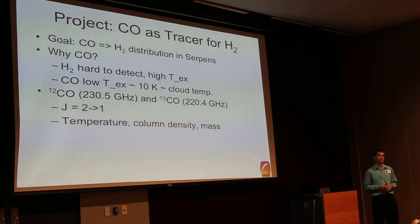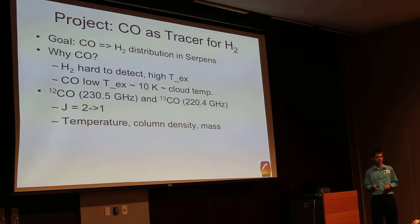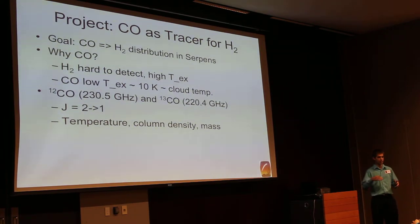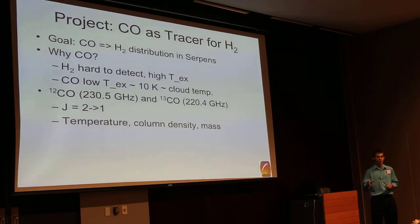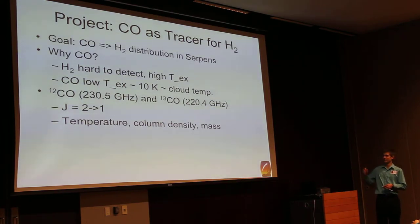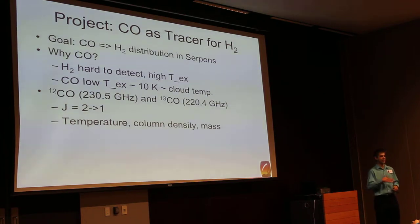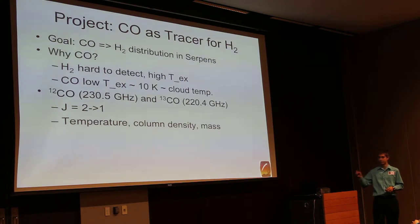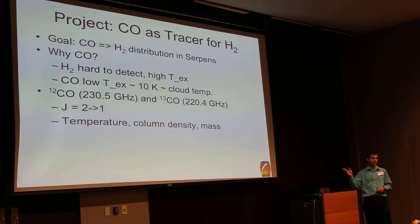The goal of my project is to use two isotopes of carbon monoxide, 12 and 13-CO, as tracers for molecular hydrogen. H2 is what all stars initially form out of, and so we are looking at the current and future star formation going on in the Serpens. Why don't we just look at H2? Well, in the submillimeter bands, H2 is a rotationally symmetric molecule, so it doesn't have any radial emission. Instead, we have to use another molecule to trace it, and the second most abundant one is carbon monoxide.